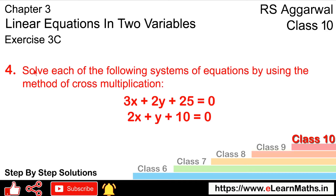Let's do question number 4 of exercise 3C, that is linear equations in 2 variables. Question number 4 says: solve each of the following system of equations by using the method of cross multiplication. We need to solve these two equations through cross multiplication and find the values of x and y. Our first equation is 3x + 2y + 25 = 0, and our second equation is 2x + y + 10 = 0.